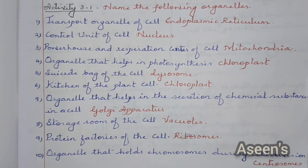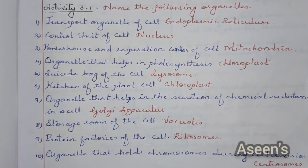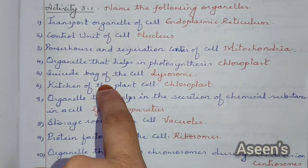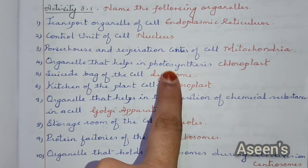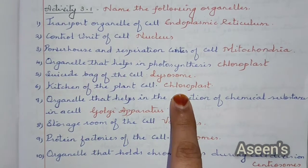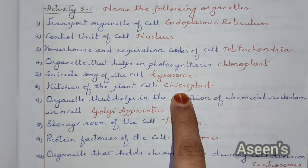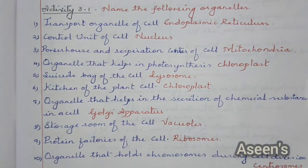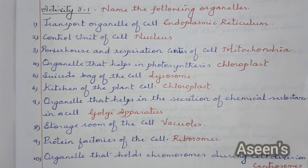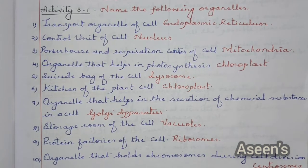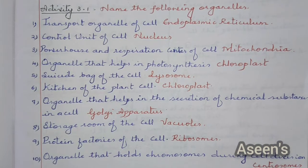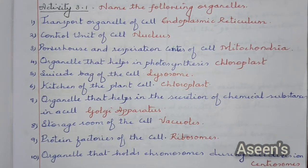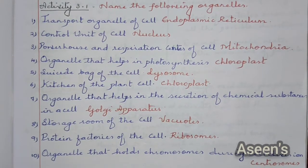Powerhouse and respiration center of the cell: mitochondria. Organelle that helps in photosynthesis: chloroplast. Suicide bag of the cell: lysosome. Kitchen of the plant cell: chloroplast. Organelle that helps in secretion of chemical substances: Golgi apparatus. Storage room of the cell: vacuoles. Protein factories: ribosomes.